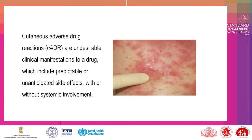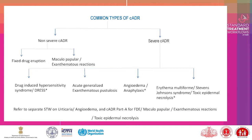Cutaneous adverse drug reactions are undesirable clinical manifestations to a drug, which include predictable or unanticipated side effects with or without systemic involvement. Common types of cutaneous adverse drug reactions are classified into two categories: non-severe and severe.